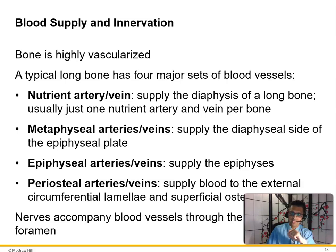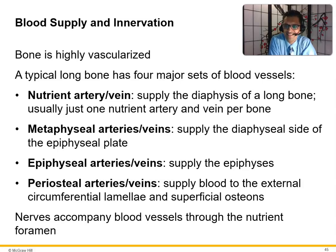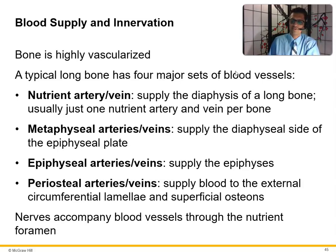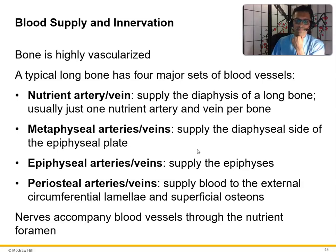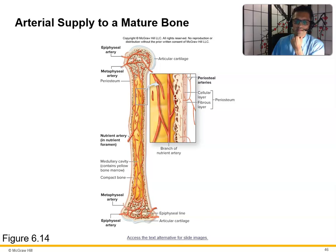Bone is highly vascularized. If you break a bone, within six to eight weeks it's pretty much healed — a normal fracture can heal on its own due to the blood supply, though a severe fracture may need screws and plates. A typical long bone has four major sets of blood vessels: the nutrient artery and vein, metaphyseal arteries and vein, epiphyseal artery and vein, and periosteal vessels — all named for where they supply blood.